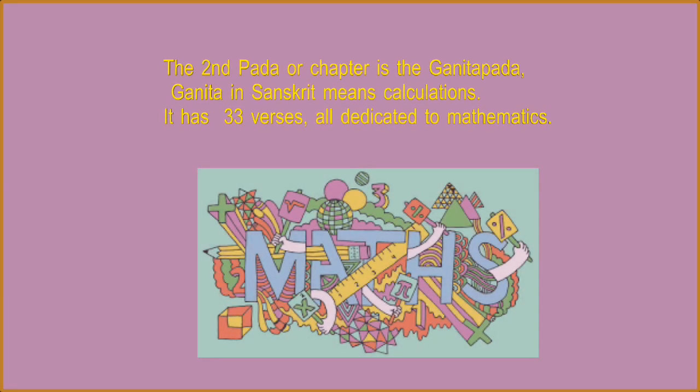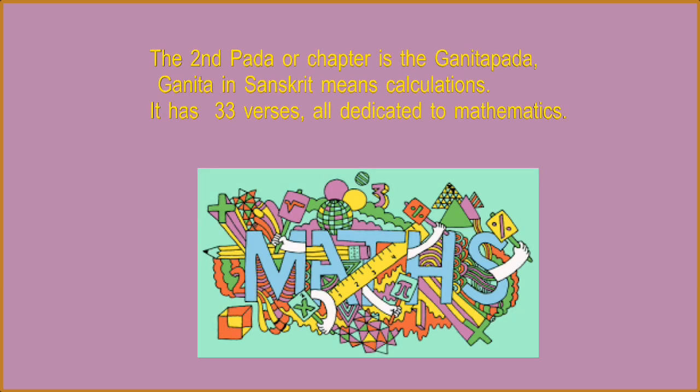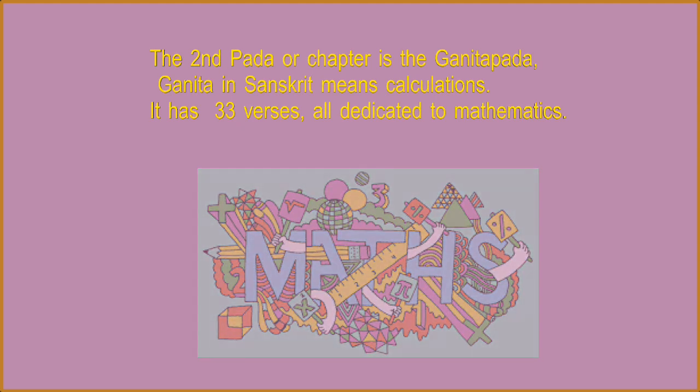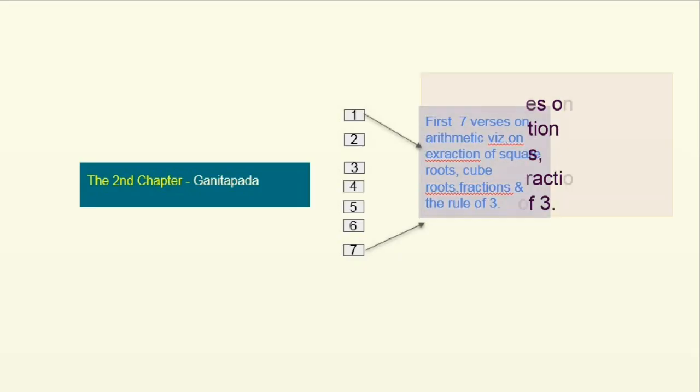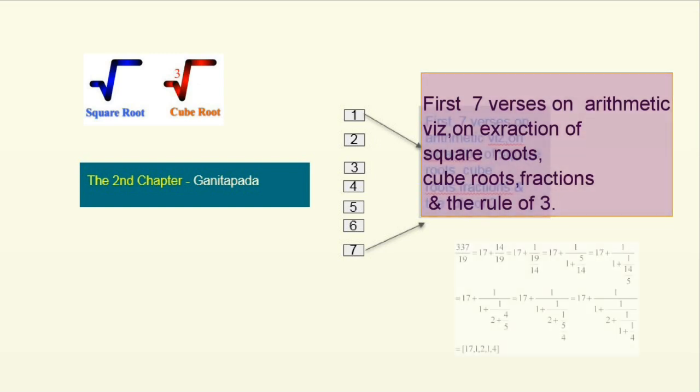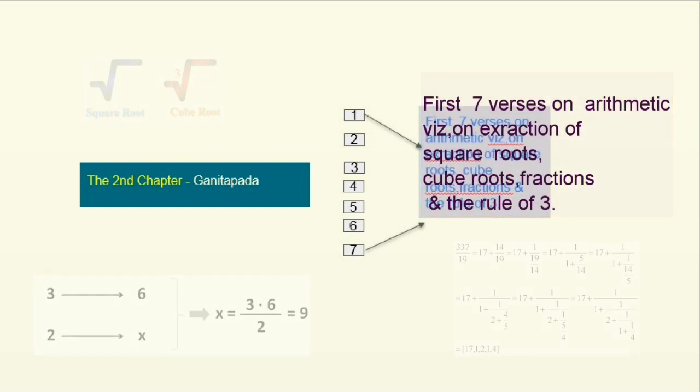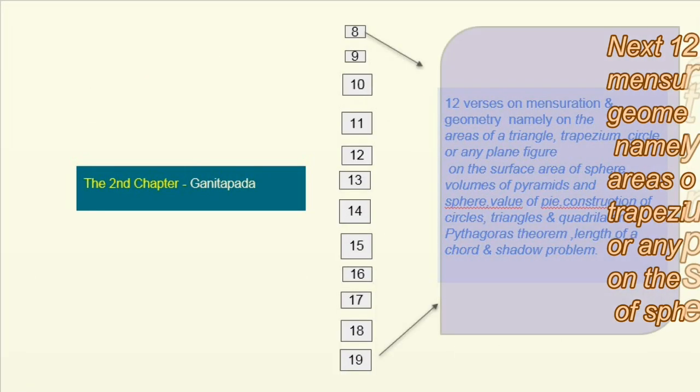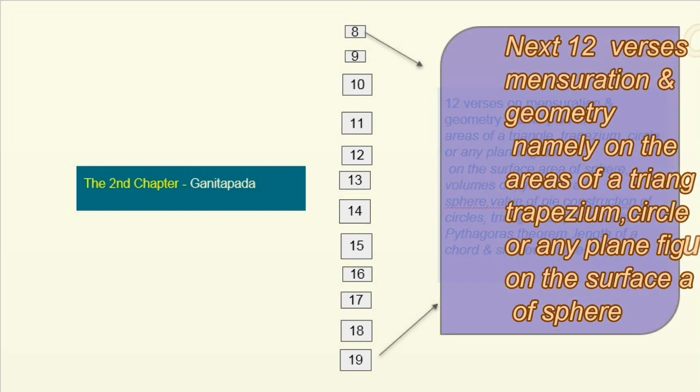The second path or chapter is the Ganita path. Ganita in Sanskrit means calculations. It has 33 verses. The first seven verses on arithmetic. For example, on extraction of square roots, cube roots, fractions and the rule of three. Next, twelve verses on mensuration and geometry.